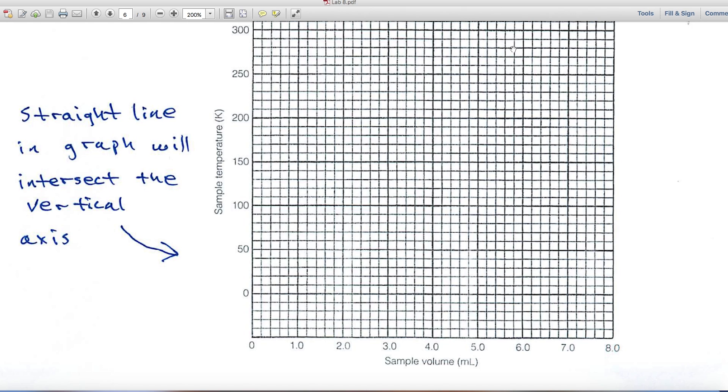And what you'll find is that when you plot these values of temperature versus volume, you get a number of points. You can draw a straight line. And where that straight line intersects the vertical column, the vertical axis, that's where you'll determine your value of absolute zero.